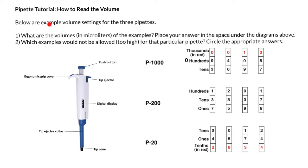Below are example of volume settings for the three pipettes: P1000, P200, and P20. So here's the first question: What are the volumes in microliters of the examples? Place your answer in the space under the diagrams above. And second question: which examples would not be allowed too high for that particular pipette? Circle the appropriate answers.